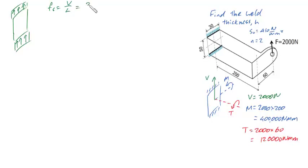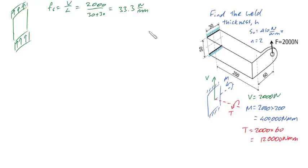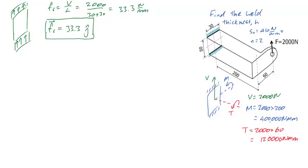In this case, that's 2,000 divided by 30 plus 30, which is the total weld length. That gives a nice number: 33.3 newtons per millimeter. It's also useful to express this as a vector with direction. So Fs as a vector is 33.3 in the positive Y direction, written as 33.3 J-hat. I'm defining Y as positively upwards, X as positively to the right, and Z coming toward us, with unit vectors I, J, and K.